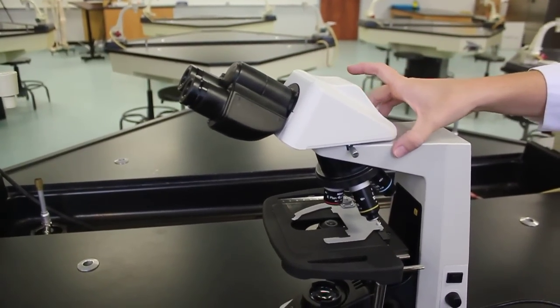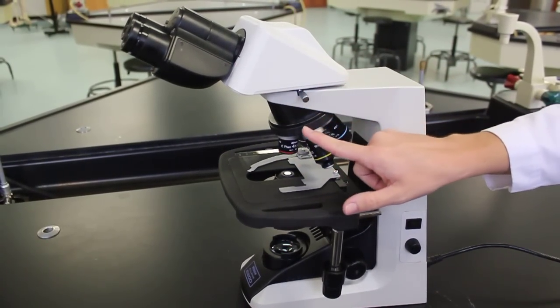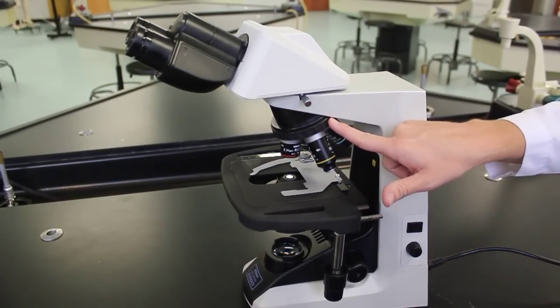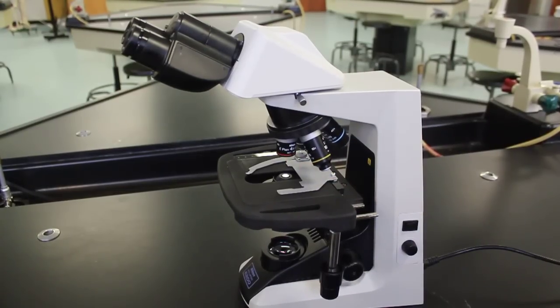Continuing down, this is the arm of the microscope. This is called the revolving nose piece. The different power objectives are attached to the nose piece.